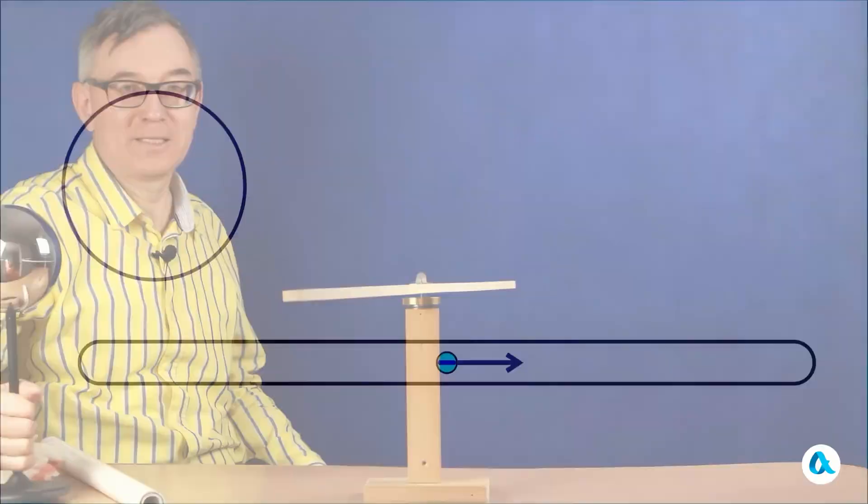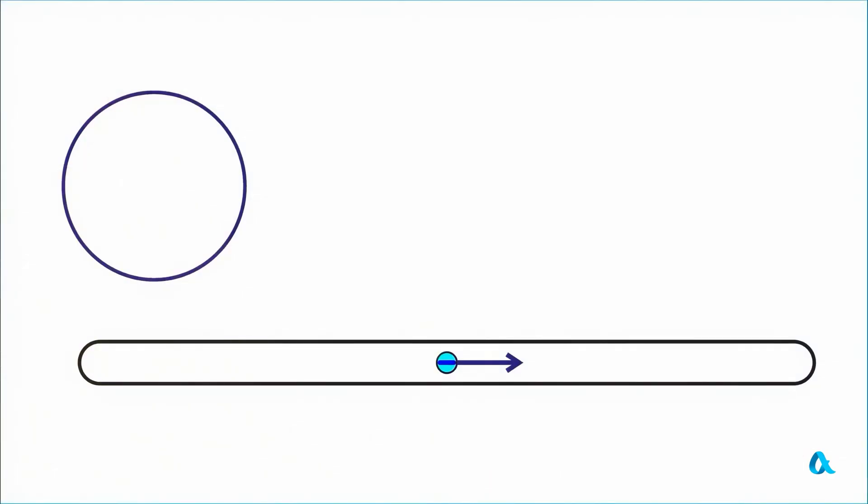To explain this experiment, we must consider that even dry wood contains some moisture and conducts electricity. And when I bring the negatively charged ball to the end of the rod, electrons move to the other end. Its end, and this end becomes positively charged and is attracted to the ball.